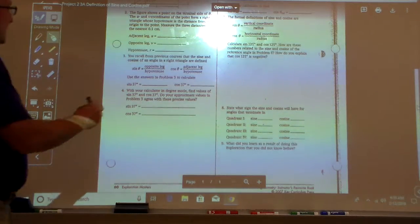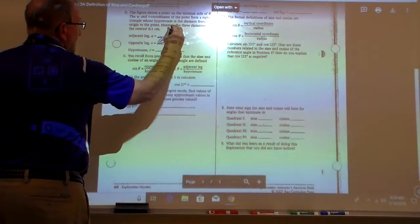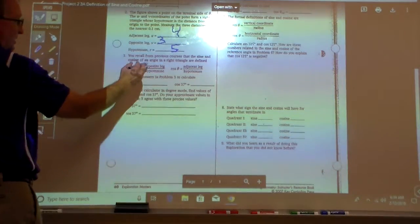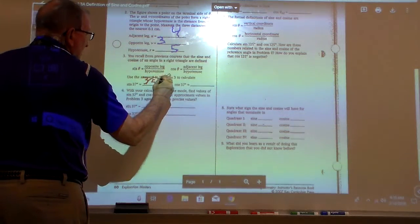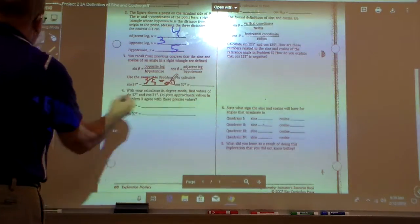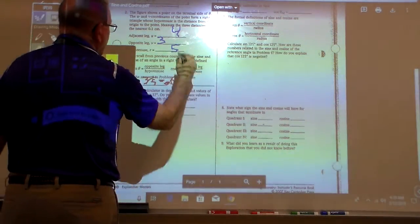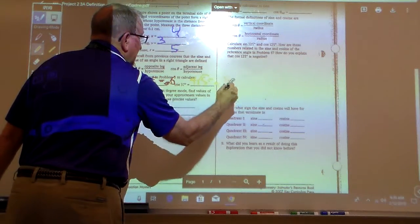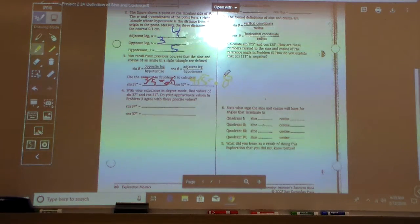If we look at number three, the number opposite here was three, this was four, and this one was five. So if we go over here, we talk about sine, our opposite being over our leg, that would be three over five, which as a decimal is 0.6. And if I go here to cosine, that would be the adjacent, which is four over five, which would equal about 0.8.